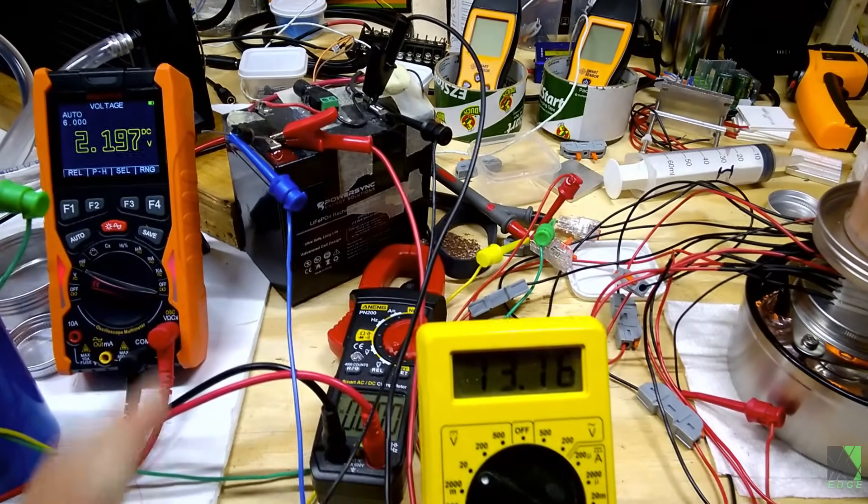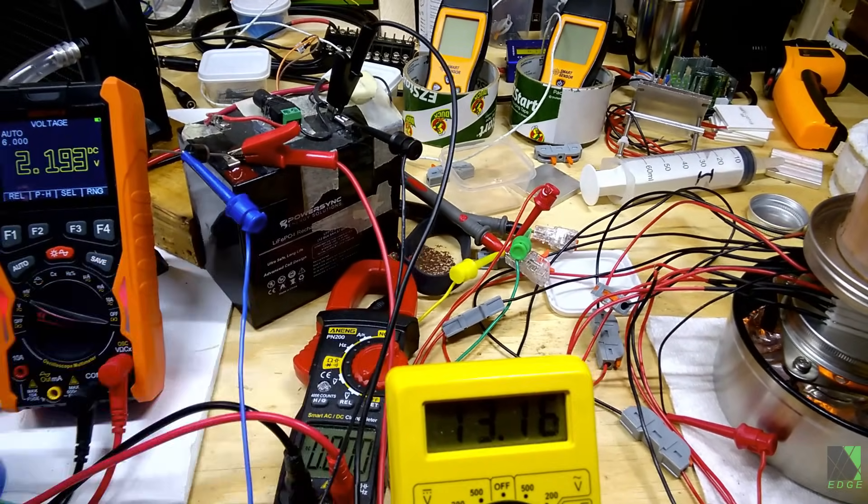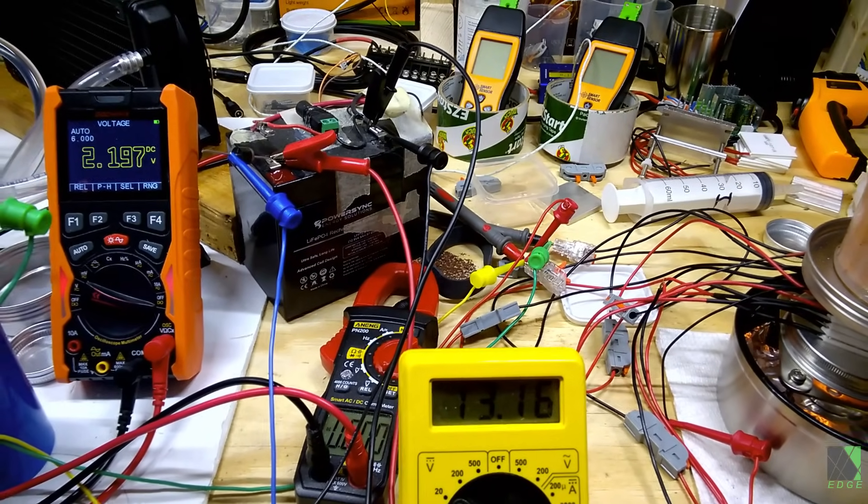You know, the power coming from this tea light could be just enough to charge this battery up and get your radio working so you could call for help. In a grid down scenario or something like that.